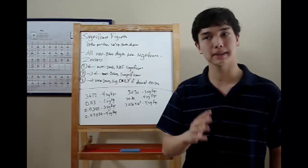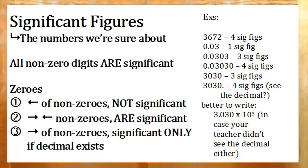So, that's all for significant figures. To recap, all non-zero digits are significant. Zeros to the left of non-zero digits are not significant. Zeros in between non-zero digits are significant. And zeros to the right of non-zero digits are significant only if there's a decimal point in the number.